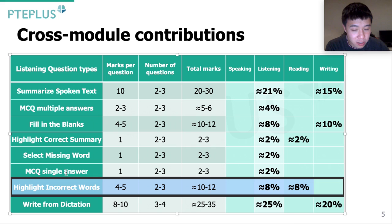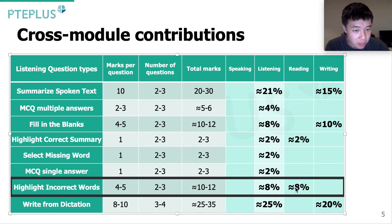We still count Highlight Incorrect Words as one of the four major listening question types. The four major listening question types are SST, FIB, WFD, and Highlight Incorrect Words. The reason is that this is cross-module — it cross-contributes to your listening and your reading scores. And it's not like XCS which is like 2% each; it's 8% each.